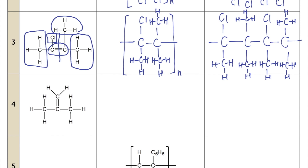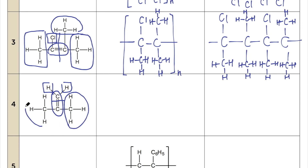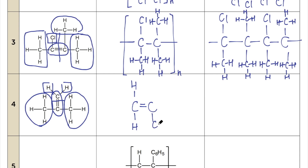In question four, the carbon-carbon double bond is not in the usual orientation, but we still do the same thing — find it, then identify what the top carbon and bottom carbon are each connected to. Draw the carbon-carbon double bond, noting the first carbon is connected to two hydrogens and the second carbon is connected to its substituent group.